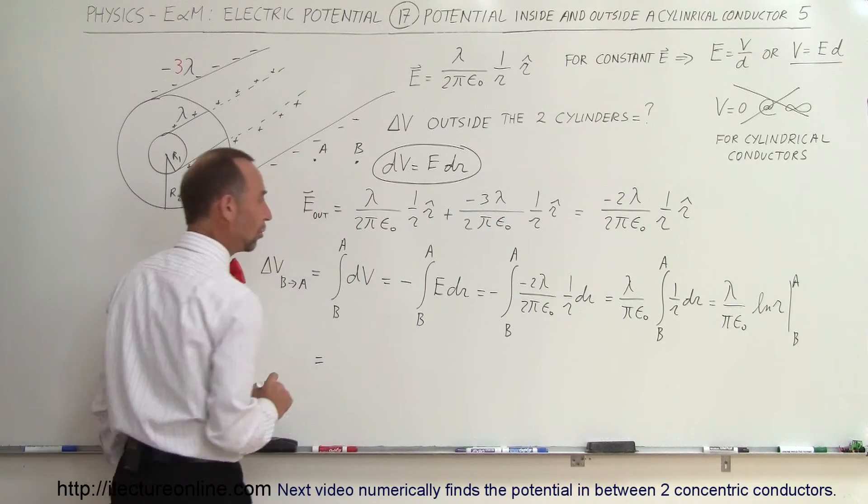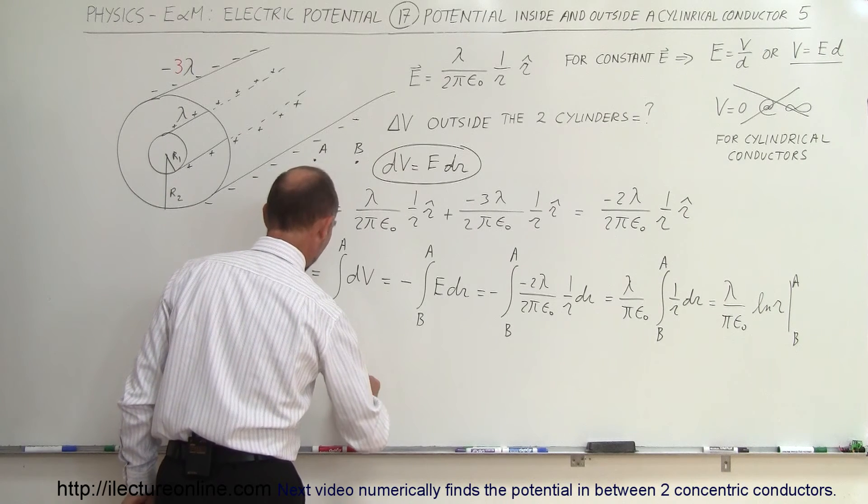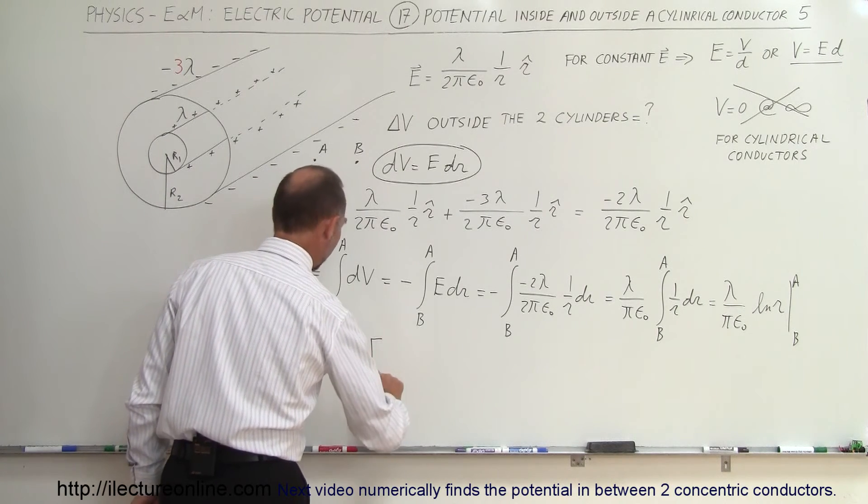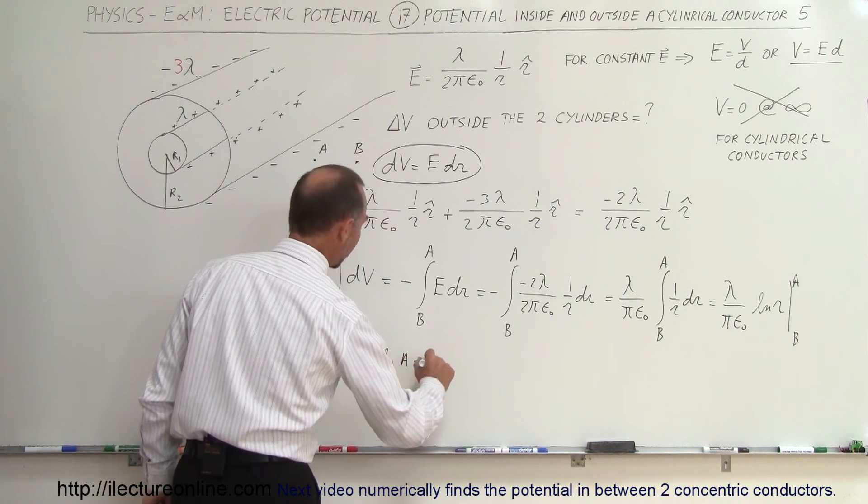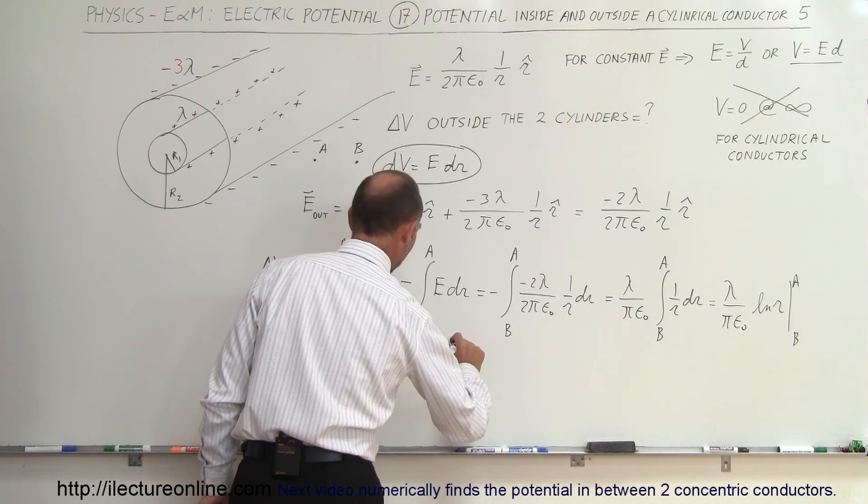So this is equal to λ divided by πε₀ times, when we plug in the upper limit, we get the natural log of A, minus when we plug in the lower limit, the natural log of B.